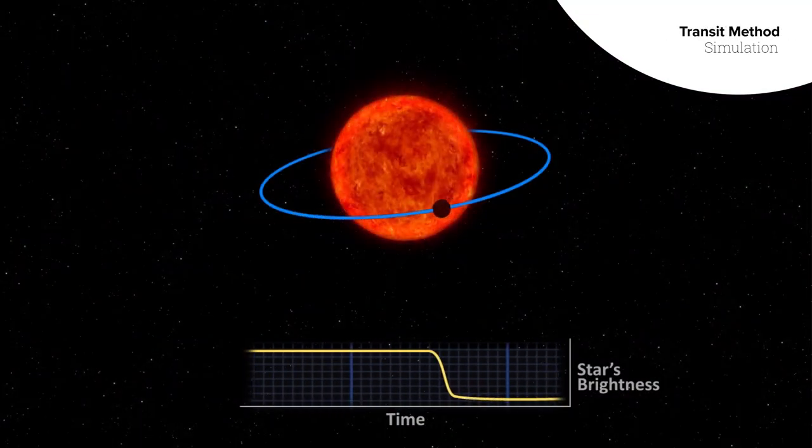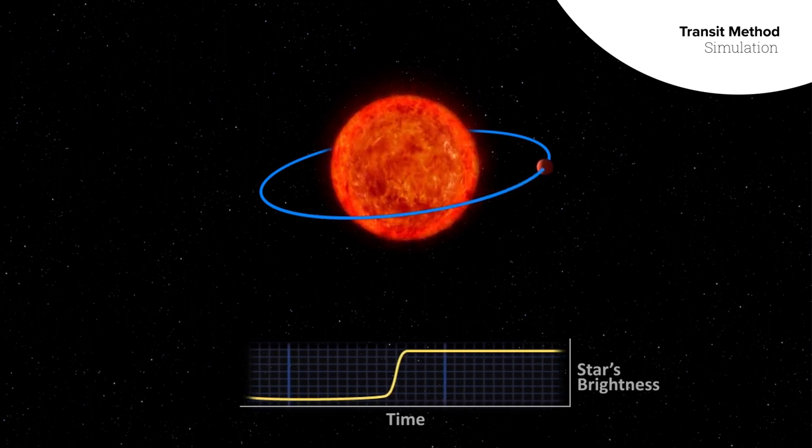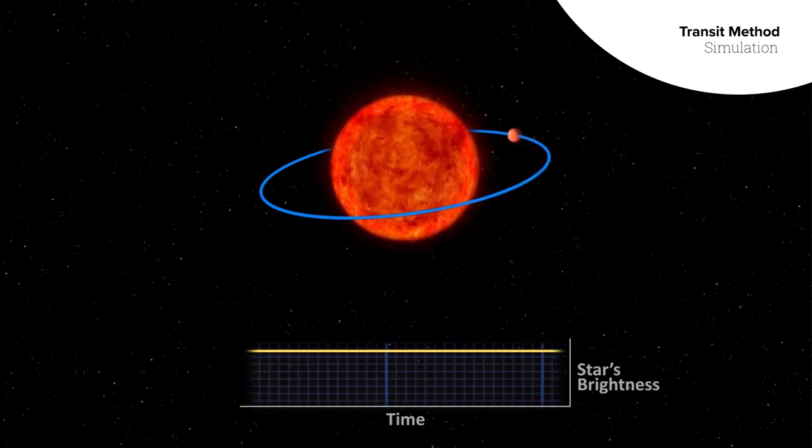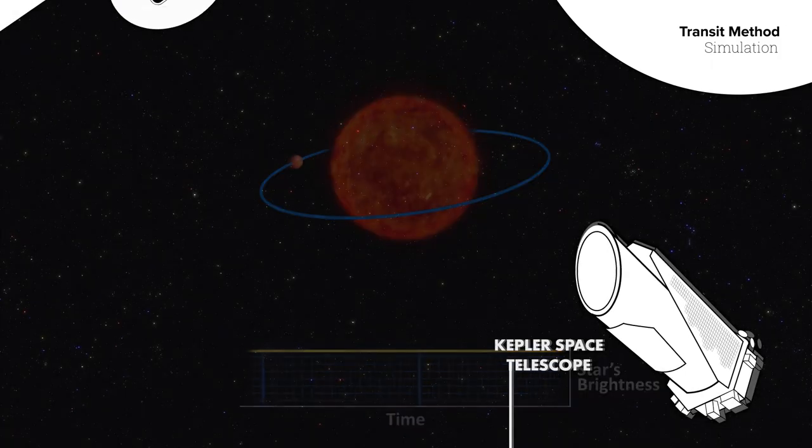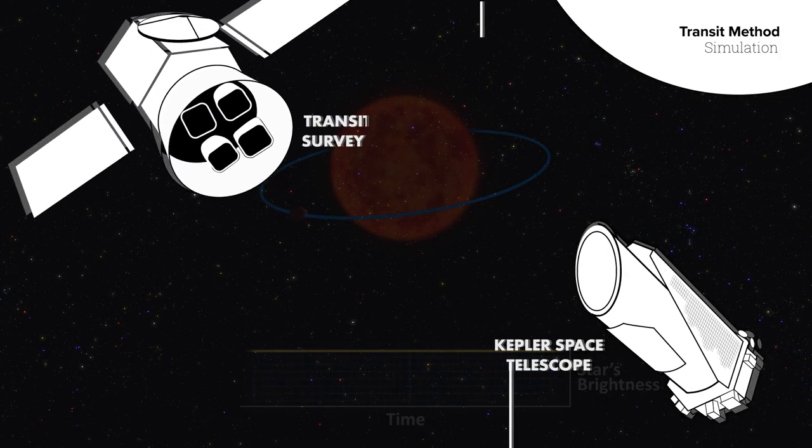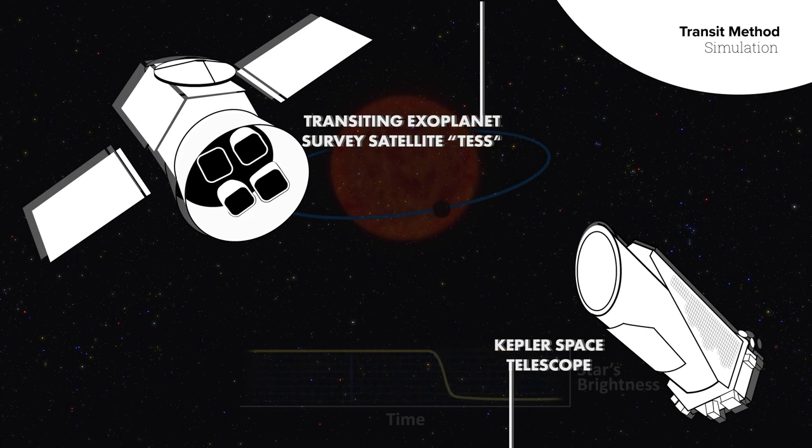The most common method is to look for an eclipse or transit as a planet passes in front of its host star. This is how the Kepler Observatory found planets, by staring at a large region of the sky and waiting for planets to pass in front of their stars, taking snapshots every second.